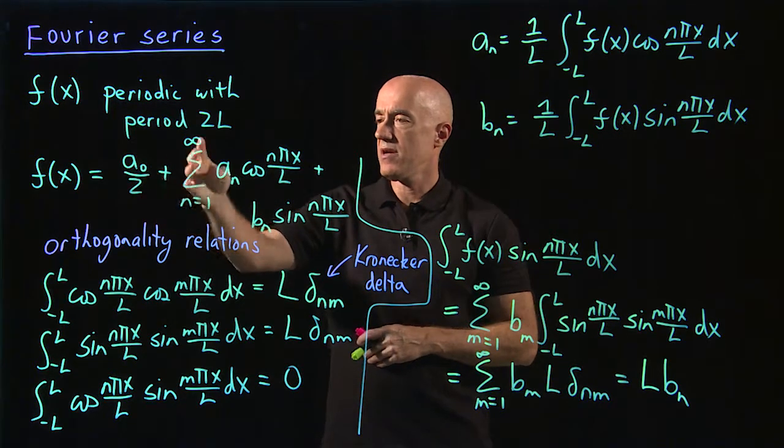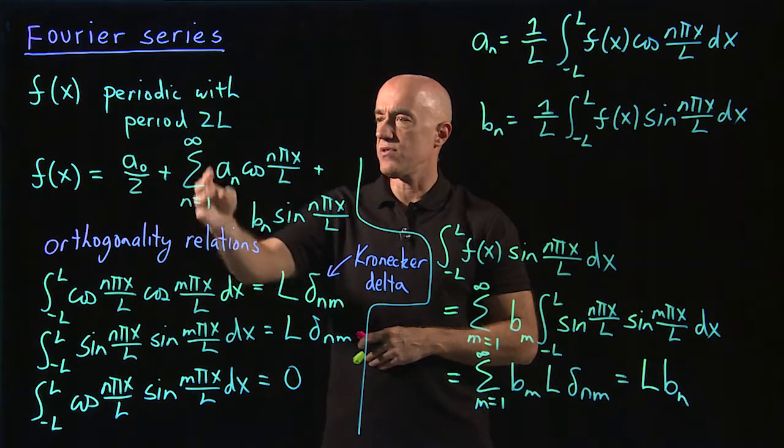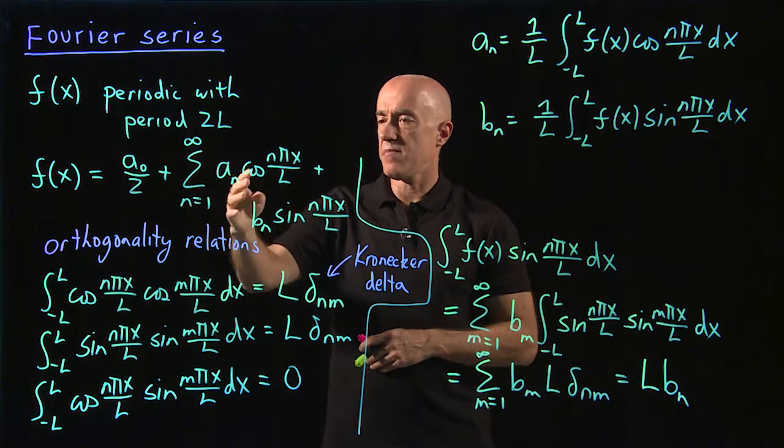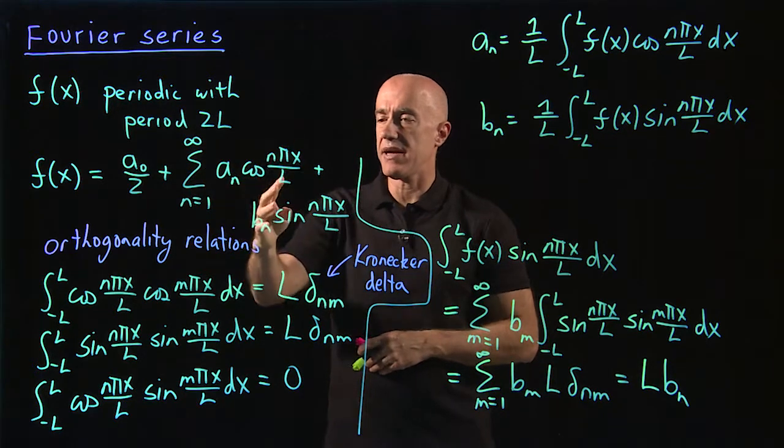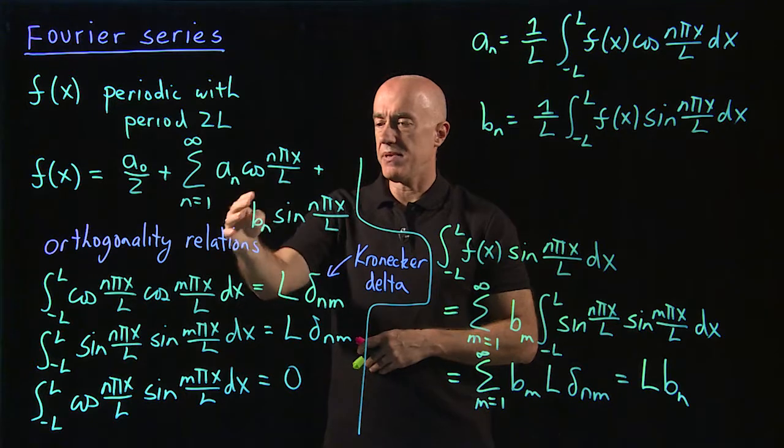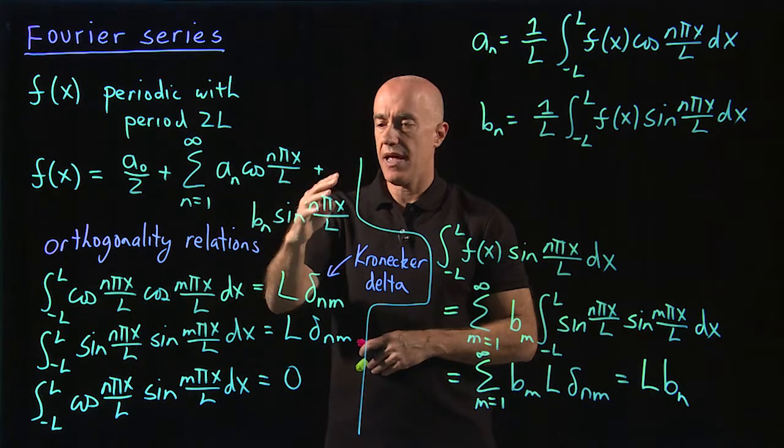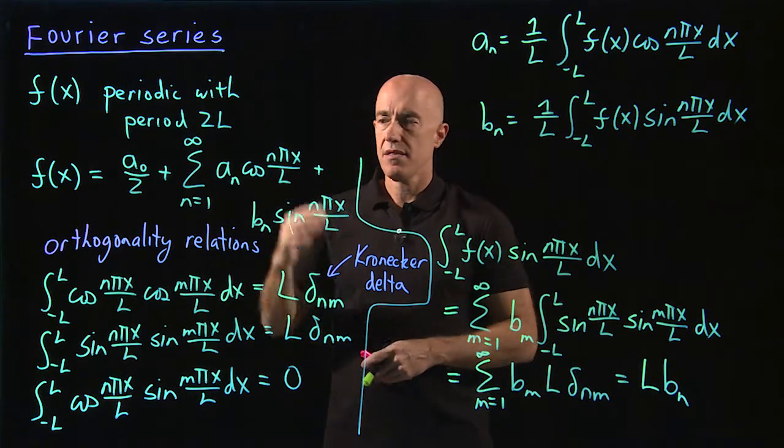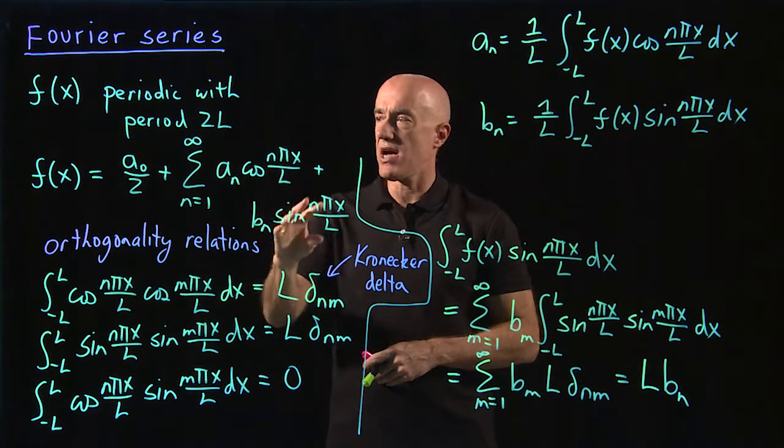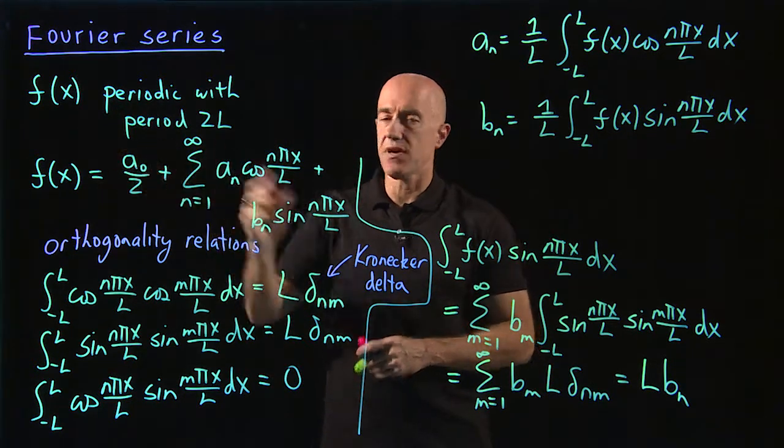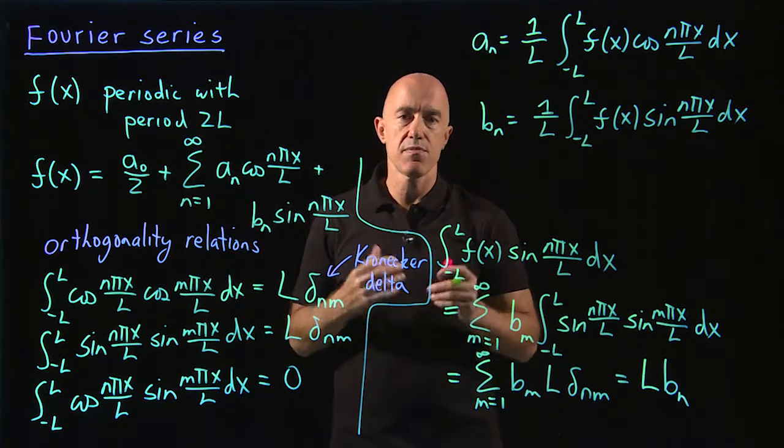We write the Fourier series as f of x equals a naught over 2, a constant term, plus the sum from n equals 1 to infinity of a sub n times cosine n pi x over l, plus b sub n times sine n pi x over l. The use of the cosine and the sines ensure that this function is periodic with period 2l.